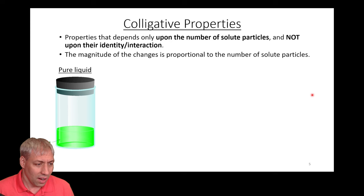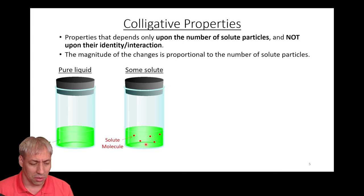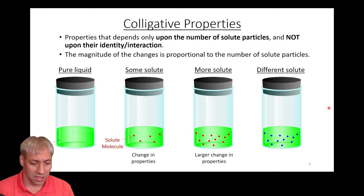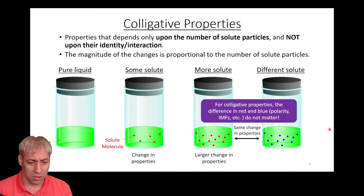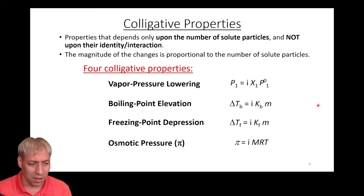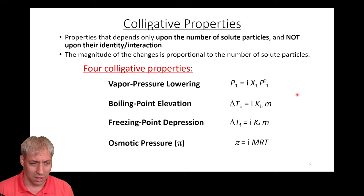If you take a pure liquid solvent, it's going to have a vapor pressure. Add some solute molecules to it, and it's going to change the properties — that's what colligative properties are. The solute molecules change the properties, and if you add more, there's a larger change. Add a different solute, and it turns out it doesn't matter as long as the number of particles are the same — you get the same property change. Colligative properties don't care about the nature of the molecule, only the number of molecules in solution.